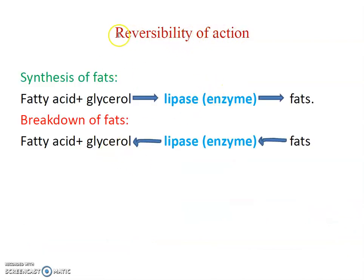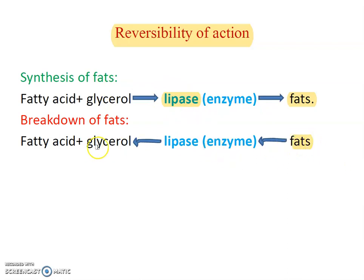Reversibility of reaction is another important property of enzymes. Some enzymes have a reversibility property. For example, fatty acid and glycerol are converted into fat by the enzyme lipase. Conversely, when fat is converted back into glycerol and fatty acid, the same enzyme lipase is required. So the lipase enzyme works in both the building and breakdown of fats.